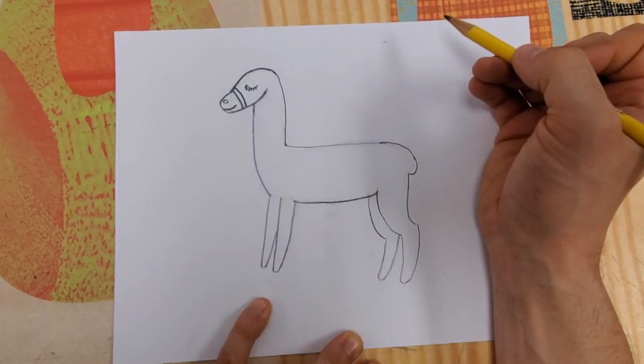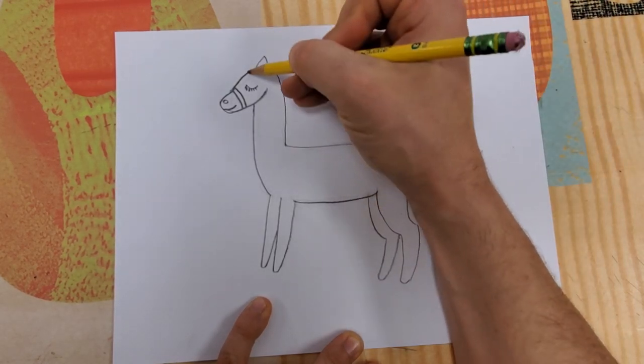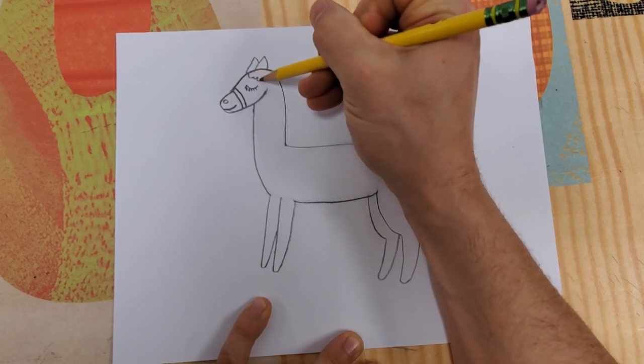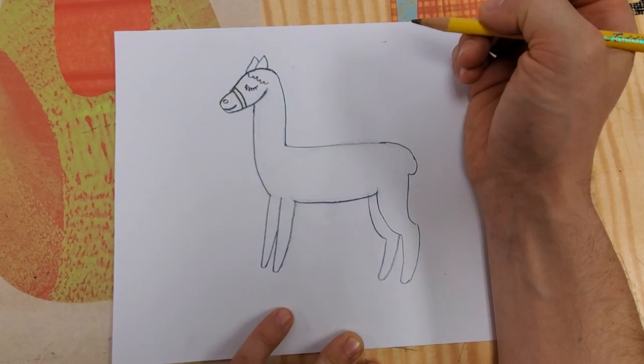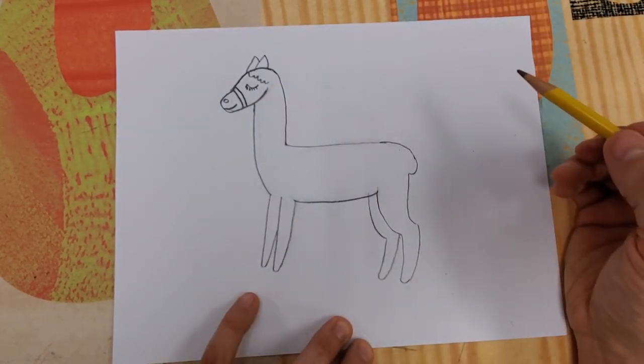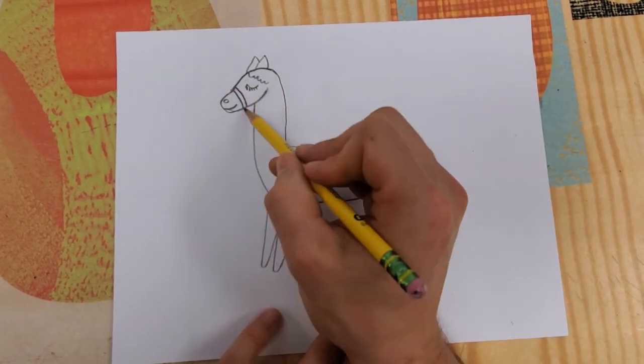At the top of my alpaca, I'm sorry, I keep interchanging llama and alpaca. I do want to show two ears, a little bit of, remember that alpacas are raised for their fur, their hair. And so I do want to show a little bit of that from these lines, which represent its harness.